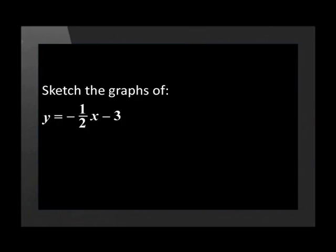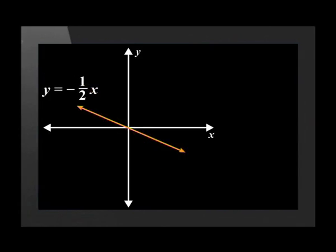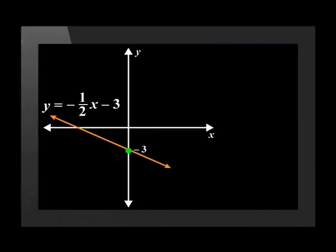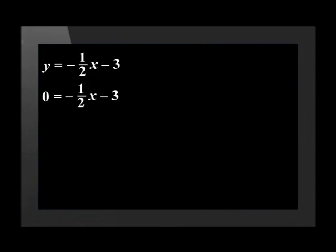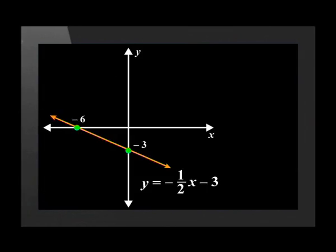We'll try one more: sketch the graph of y equals negative one-half x minus 3 and y equals negative 2x squared plus 4. The graph of this straight line has an a value of negative one-half, so this line is pulled closer to the x-axis and in the same direction as the negative parent line graph. The q value indicates that the line has a y-intercept of negative 3. To obtain the x-intercept, set y equal to 0 and solve for x: negative 3 equals negative one-half times x, giving x equals negative 6. So the x-intercept is (negative 6, 0), and the graph intersects the x-axis at negative 6.